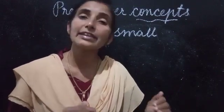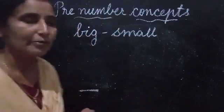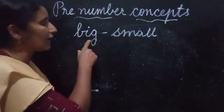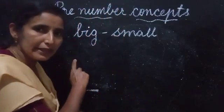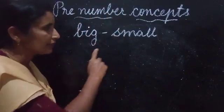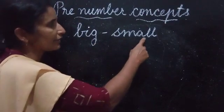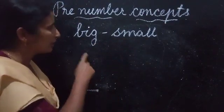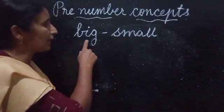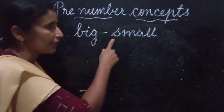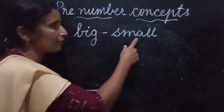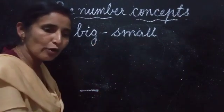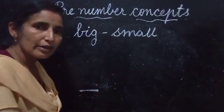Let us learn the spelling. B-I-G, Big. S-M-A-L-L, Small. B-I-G, Big. S-M-A-L-L, Small.